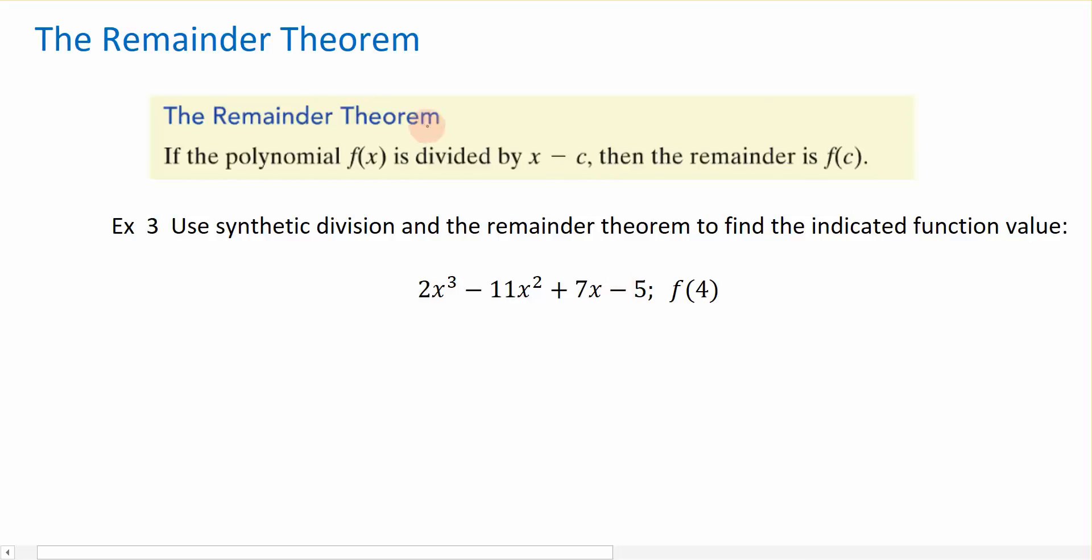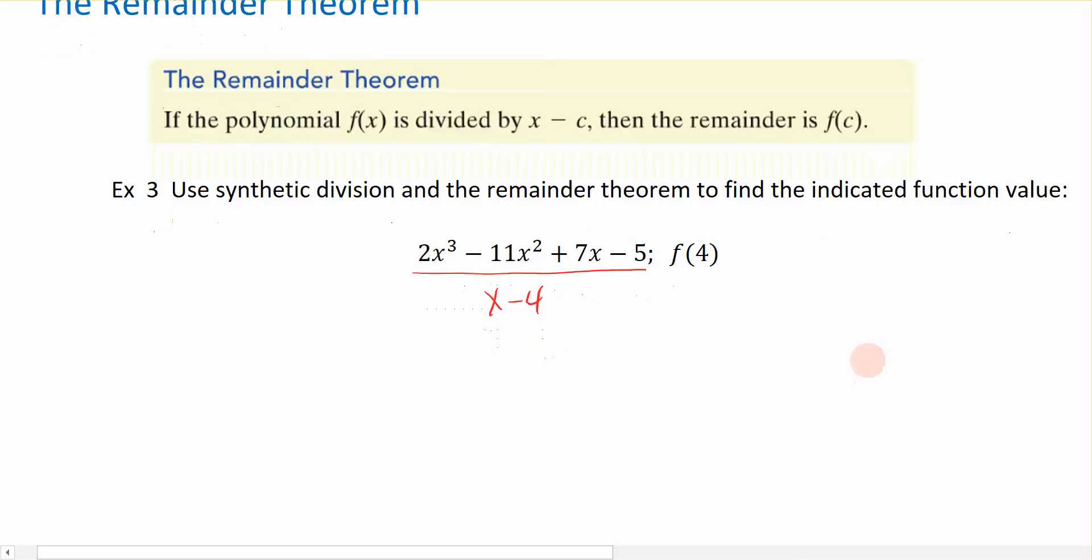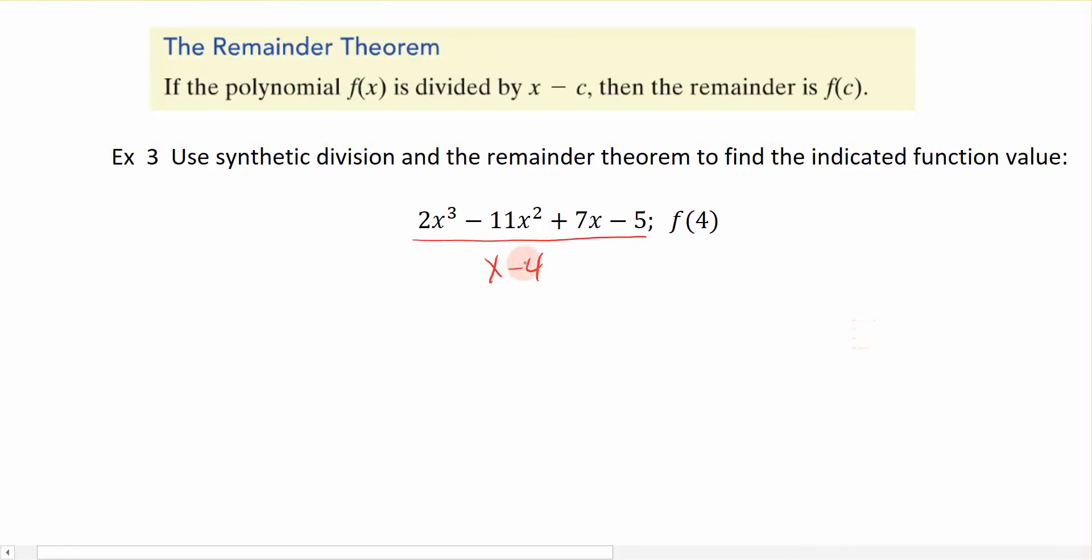And if I apply the remainder theorem, it says that if I am basically dividing my function by x minus 4, that's going to evaluate the function at 4. Now, we're going to do this using synthetic division. And since I already wrote this as my polynomial divided by x minus 4, remember when I do synthetic division, I'm just going to bring that 4 out as the opposite sign of what I had written it right here.